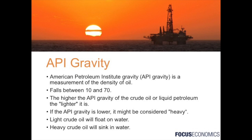One way to think of the density of crude oil is whether or not it will float on water. A lighter crude oil will float on water, whereas a heavier crude oil will sink in water. One way to measure the density of crude oil is through the American Petroleum Institute gravity, or API gravity, which measures the density of oil or petroleum products. This number normally falls between 10 and 70, with lighter crude oil having a higher API gravity and heavier crude oil having a lower API gravity.